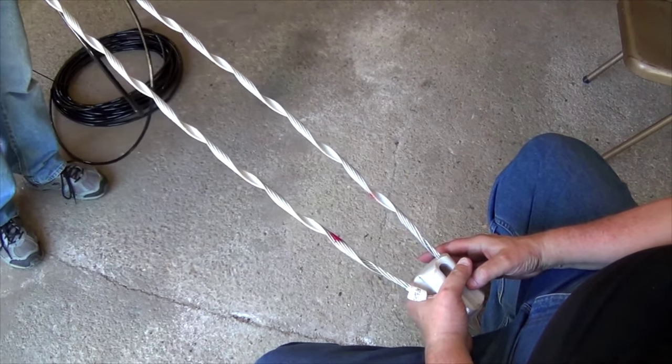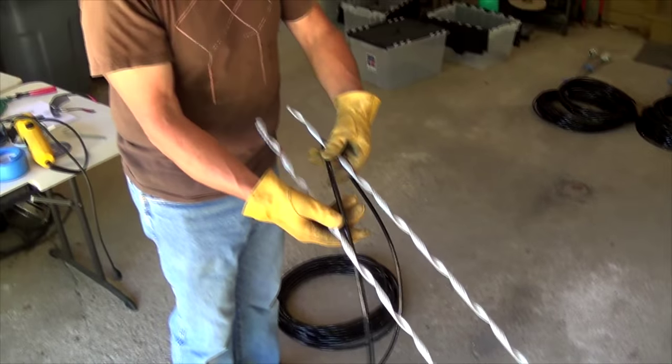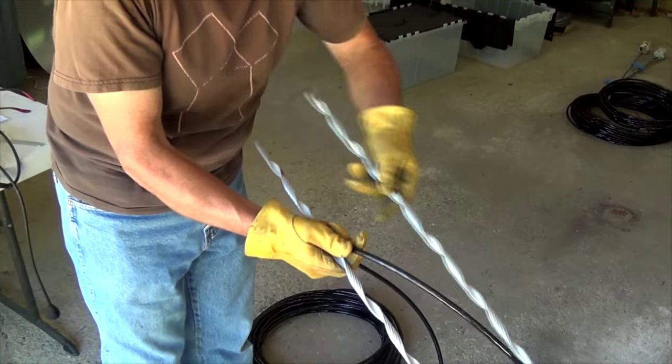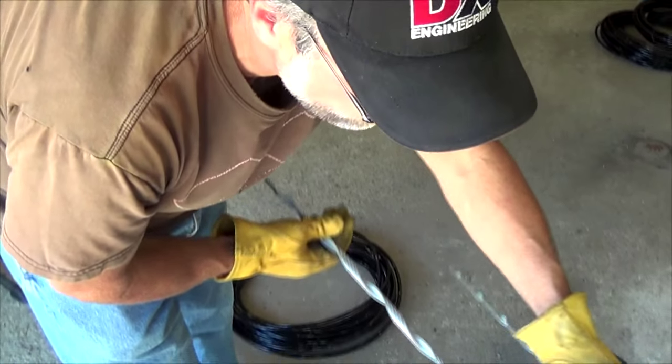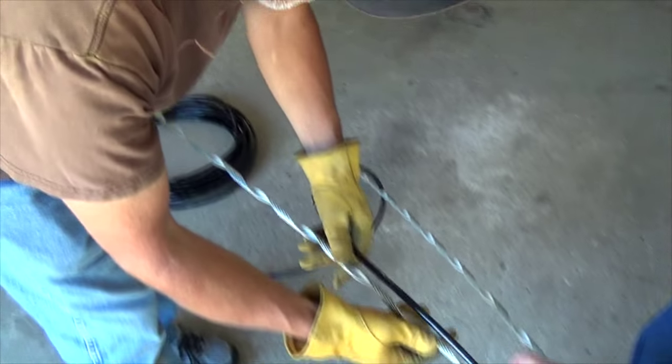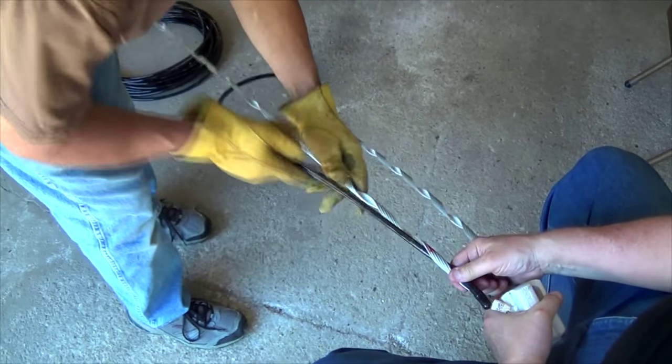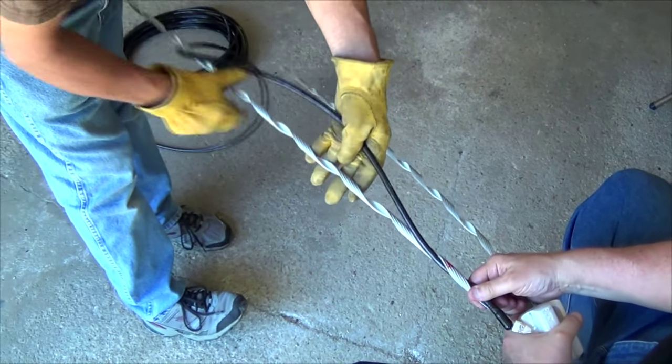First thing we're going to do is identify the short end because that's going to be important when you get to the end. You need to have that one wrapped first and then the long end goes over top of it. We're going to lay that in here and start by giving about three wraps on the short end.